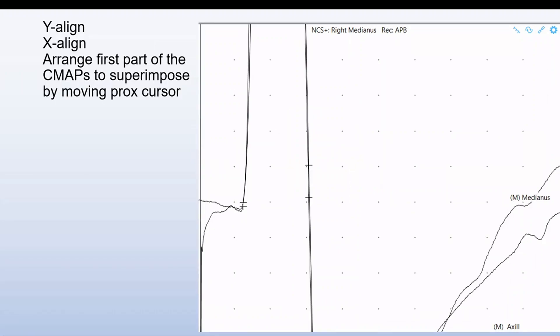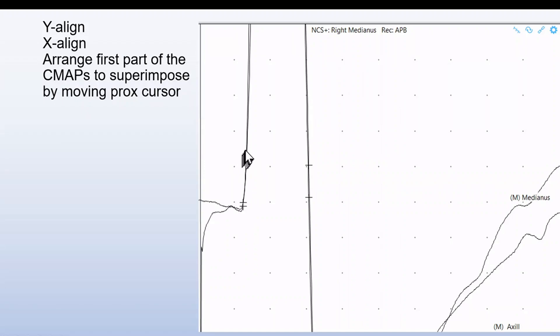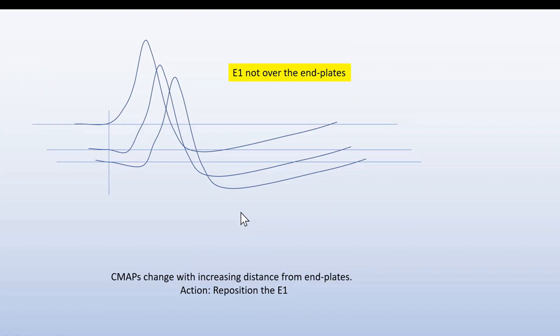By superimposing the signals in relation to the takeoff cursors, they align completely if the cursors are set on the correct place.